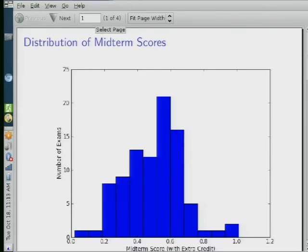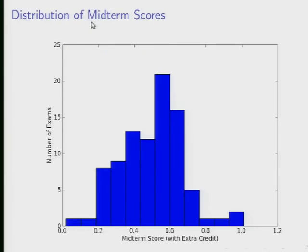Here's a simple histogram of what the midterms look like, in percentage terms — there are 100 points available. The mode is somewhere around a half, which also turns out to be rather close to the mean on the exam. It looks like four or five people did quite well and were outliers. A couple of you had unusual difficulty, and there's a big mass in the middle.